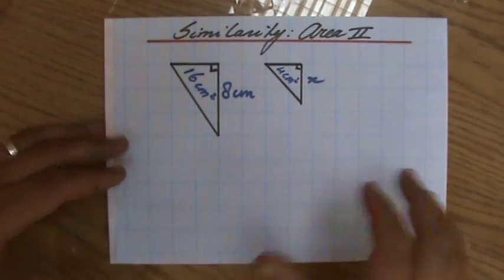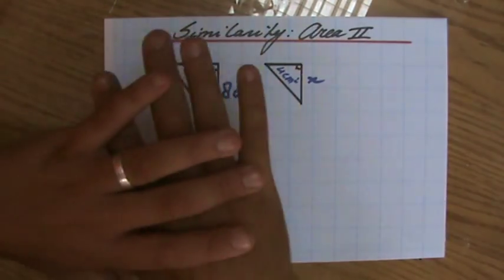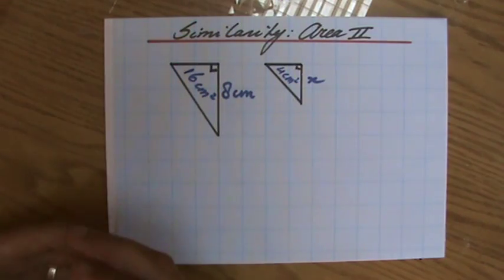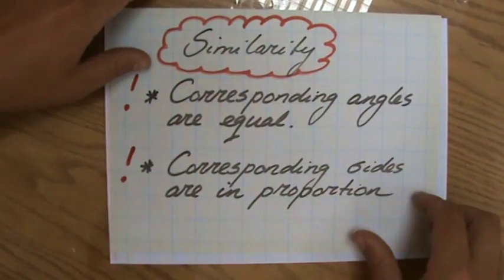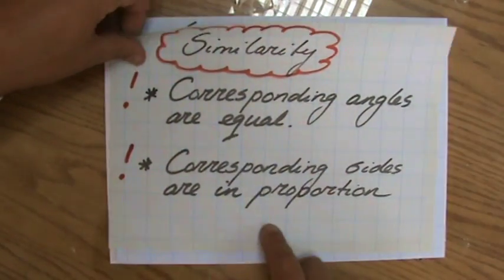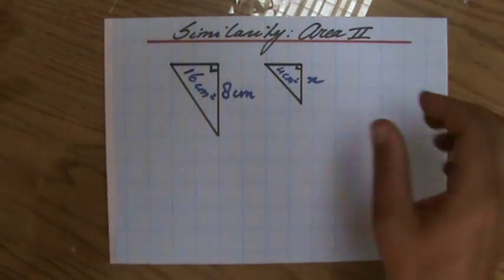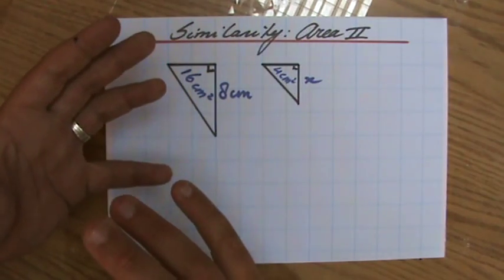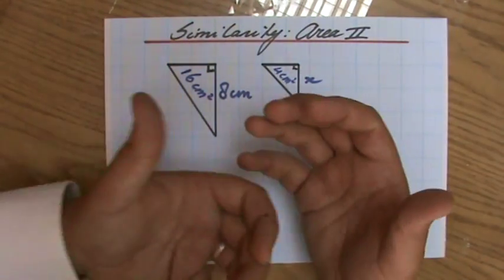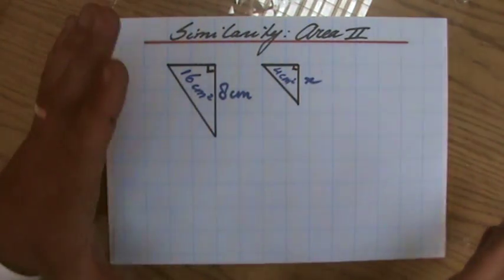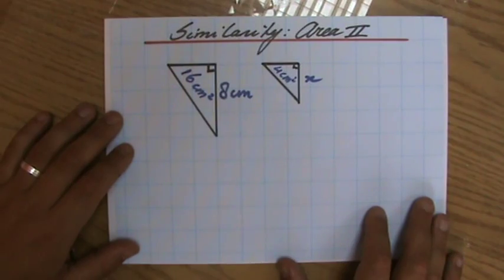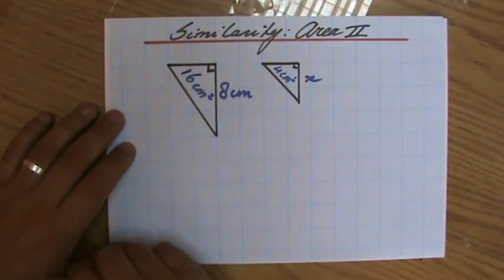We're still doing similarity with regards to area. Please make sure you've seen all my previous videos where I explain first of all what similarity is—corresponding angles are equal, corresponding sides in proportion. We've spoken about scale factor and we've also looked at the difference between questions involving area and questions involving just ordinary lengths. Make sure you've seen those videos or check my site ExplainingMaths.com where you'll find all these videos nicely organized.